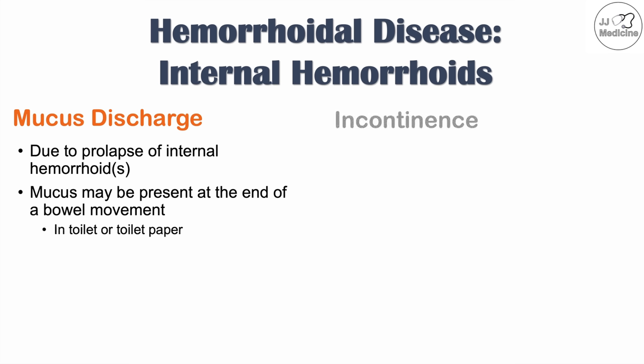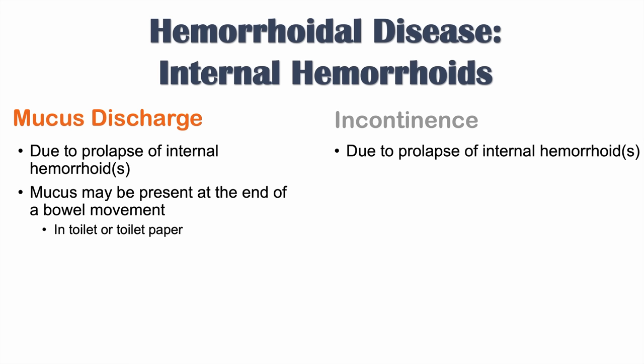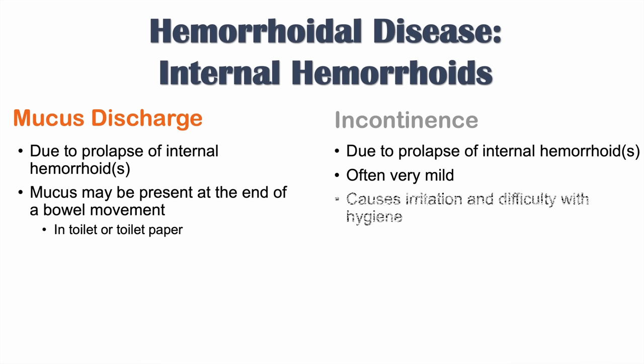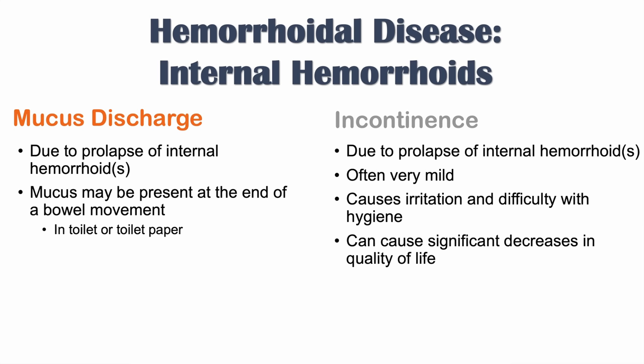Another symptom of internal hemorrhoids is incontinence, again due to prolapse of an internal hemorrhoid interfering with normal fecal continence. The incontinence is often mild, although it can be more problematic for some patients, causing irritation and difficulty with hygiene. Even when mild, it can cause significant decreases in quality of life.